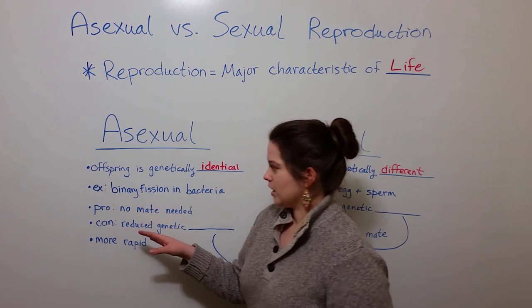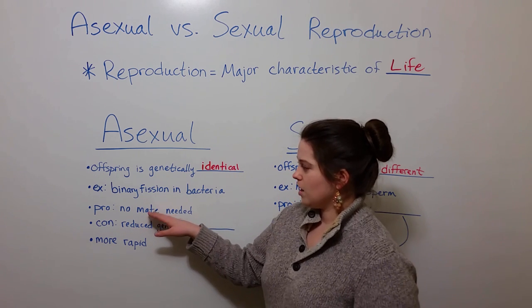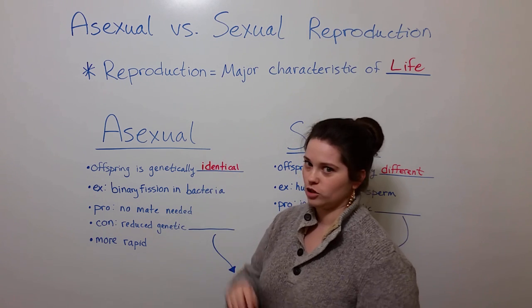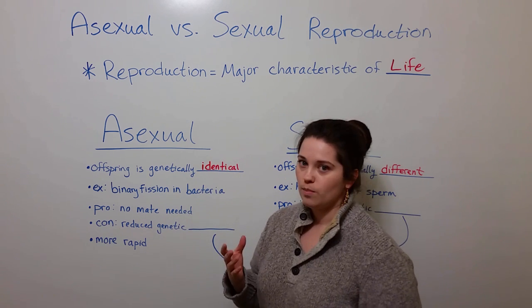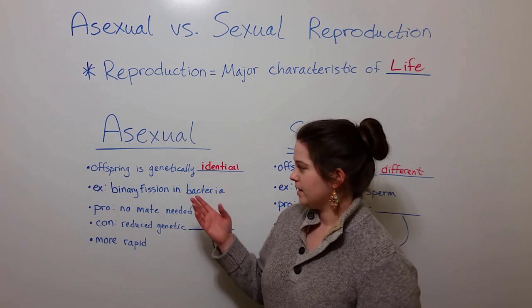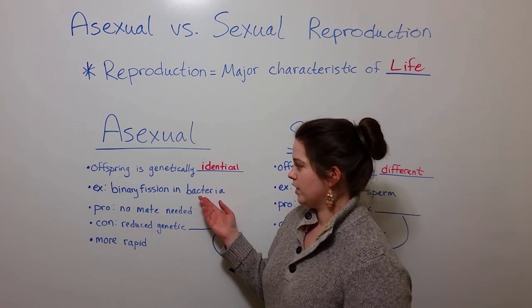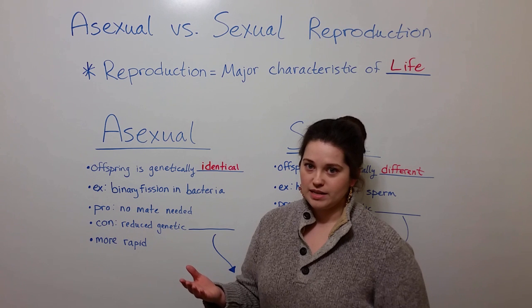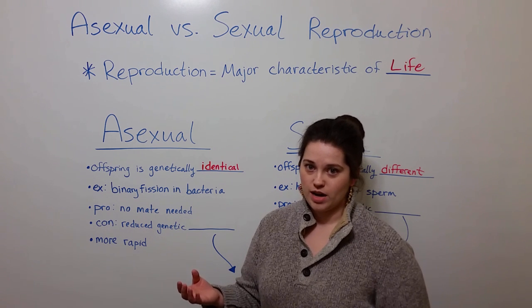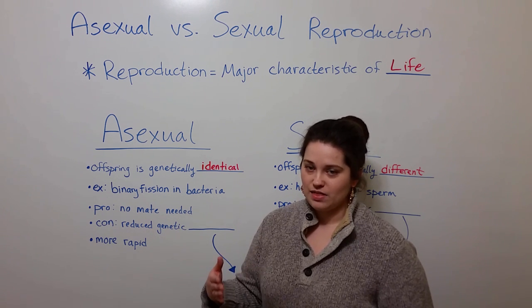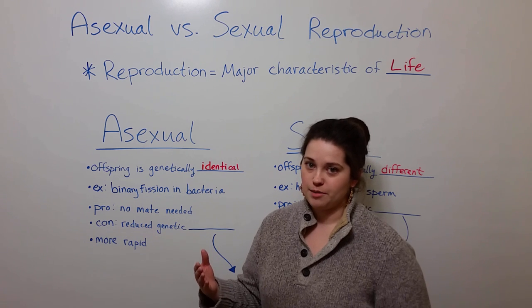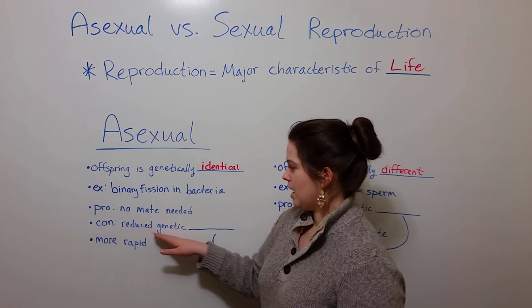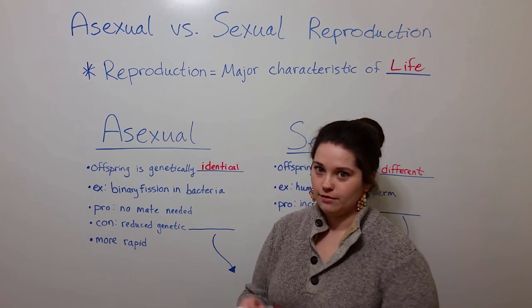Back to asexual reproduction, let's talk about some of the pros and cons. The major pro of asexual reproduction is that no mate is needed. Bacteria cells, for example, can simply divide. Whatever the environment is good for reproduction, they can divide, and they don't need to find a mate to do that. A con is reduced genetic variety.